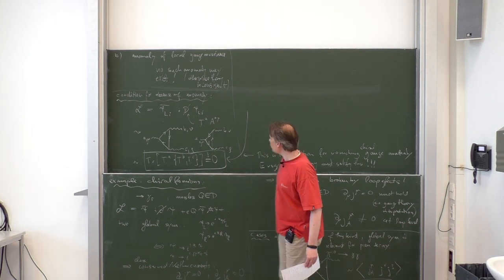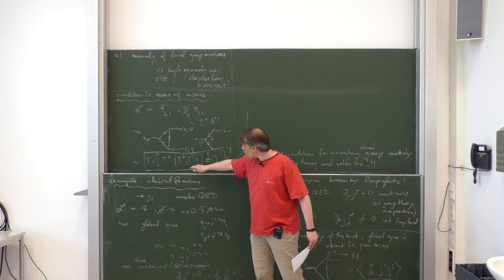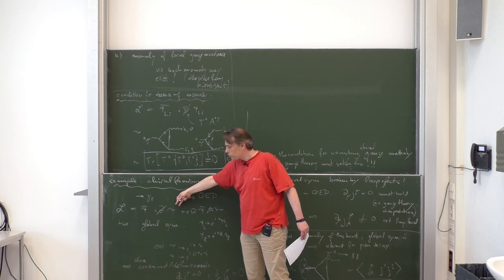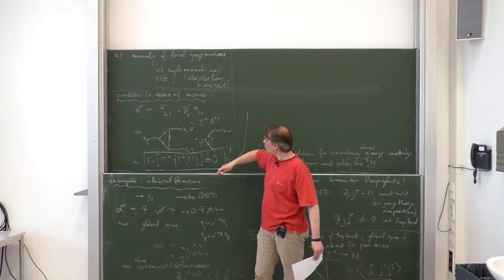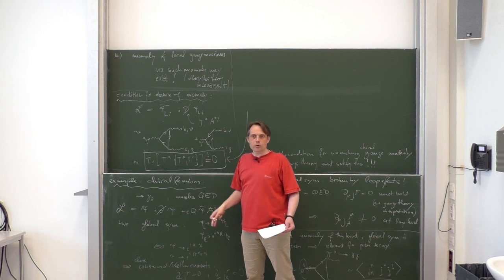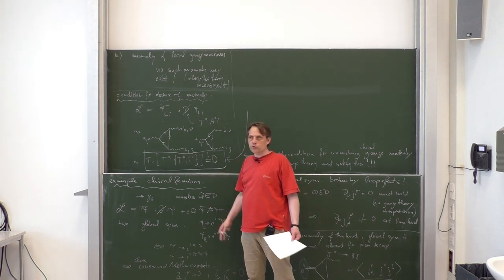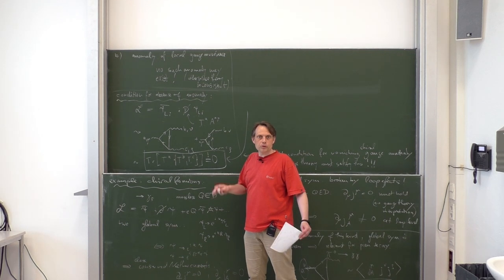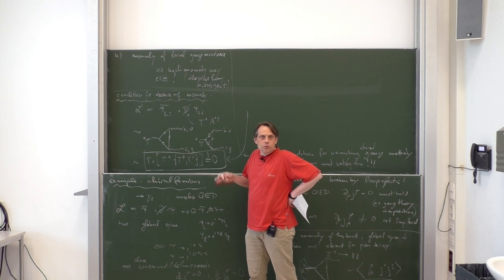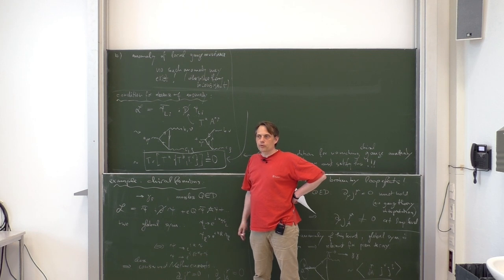This is the case for all the gauge theories you know. For QED it is the case simply because if you do that, the left-handed fermions and the right-handed anti-fermions have opposite charges. Therefore for every term there is an additional term with exactly the negative sign, so for QED it automatically adds up to zero. The same is also true for QCD, where you have left- and right-handed fermions acting in the same way. But for the standard model it is highly non-trivial, and you can check that it works also there.